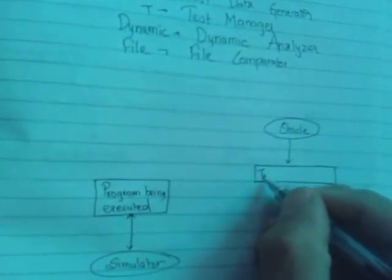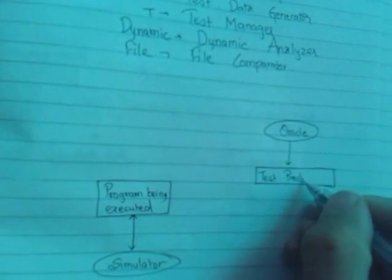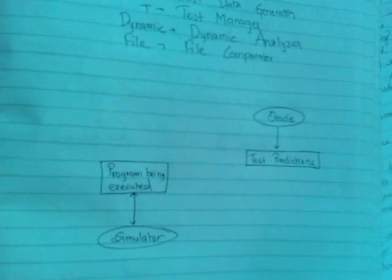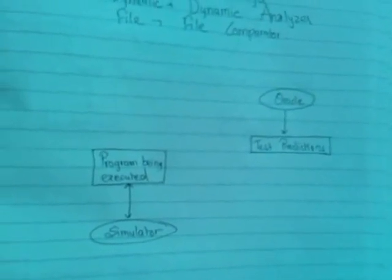Test predictions are produced using the Oracle — it is a prediction tool. The Oracle generates predictions about expected test outcomes, functioning like a report generator for test results.